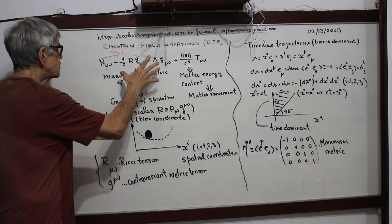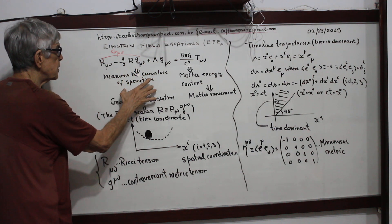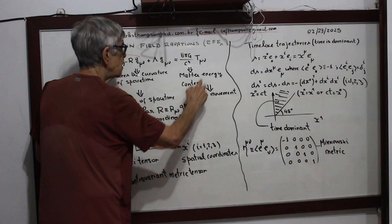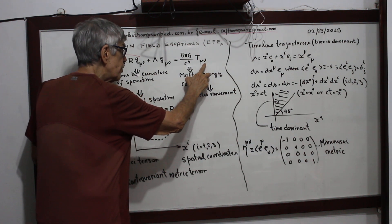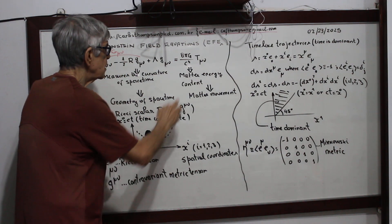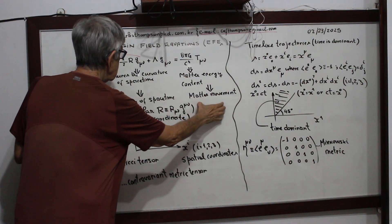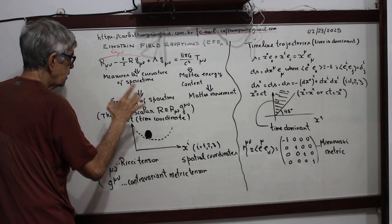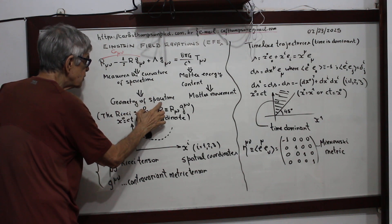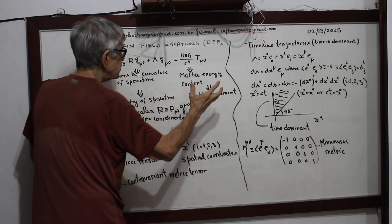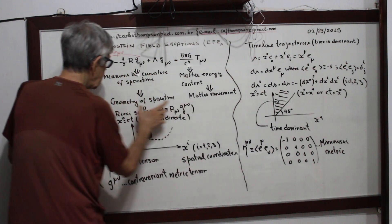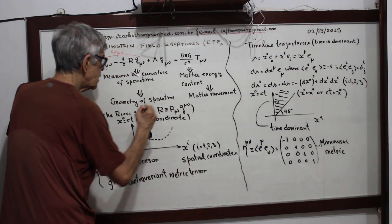The left-hand side measures the curvature of space-time. The right-hand side is the matter-energy content. The covariant energy-momentum stress tensor relates to matter, while the left-hand side relates to curvature. Never forget that the left-hand side is the geometry of space-time and the right-hand side is the matter-energy content.